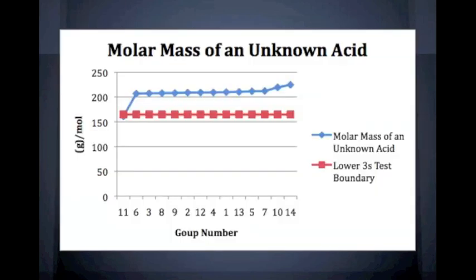Here we have a graph we created of the class's data for the molar mass of the unknown acid, and we also added in a line that shows the lower boundary of the threes test. What that means is that by using standard deviation, we figured out that everything below this line is going to be an outlier.